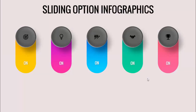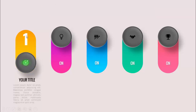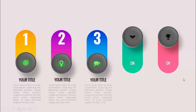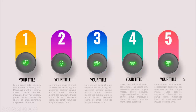In today's tutorial I'm going to show you how to make a five sliding options infographic slide in PowerPoint. I've added five options each with a unique gradient color, an oval shape along with an icon, and text at the bottom. When I click a particular oval shape it goes down, reveals the option number, and displays the detailed text.